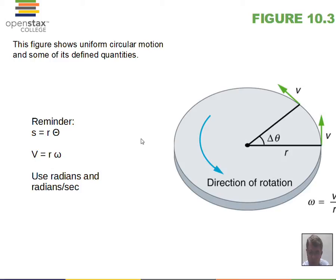You must use radians for the central angle. There's also a connection between the angular velocity in radians per second and the linear velocity in meters per second: V equals R times omega. Omega must be in radians per second, so be careful if you ever see degrees in these problems. You'll need to convert degrees into radians using the conversion factor: 2π radians equals 360 degrees, or π radians equals 180 degrees. The arc length traveled is S equals R theta, and the linear velocity equals the radius multiplied by the angular velocity.